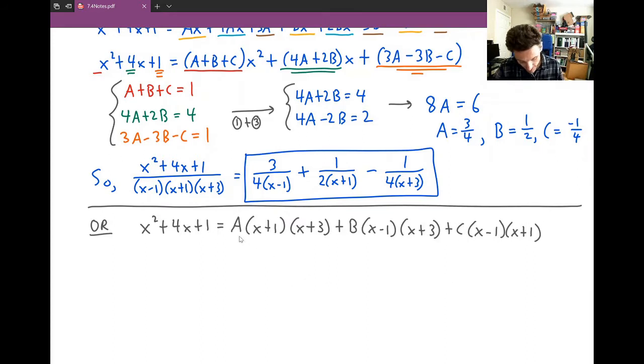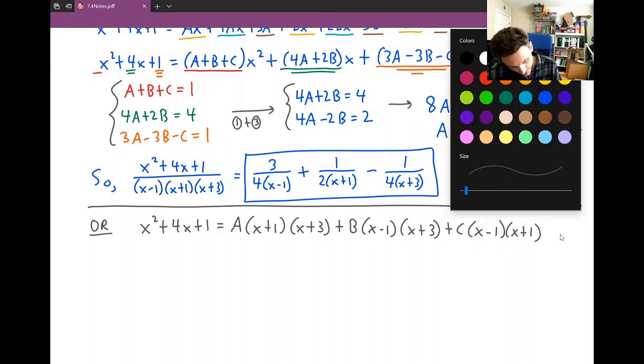if we wanted to find A, we could plug in x = 1. When that happens, we get (1-1) for the (x-1) factors, which is 0 times any other factor, giving 0. So the two terms with B and C both collapse to 0. Let's do that so you can see.